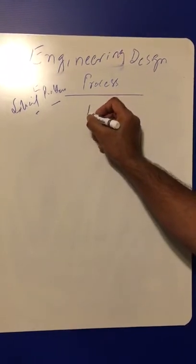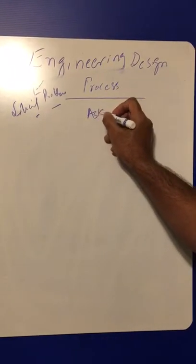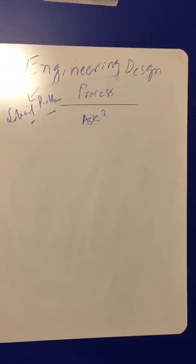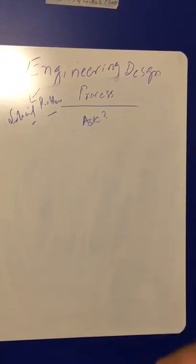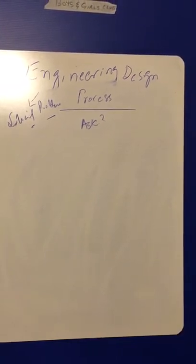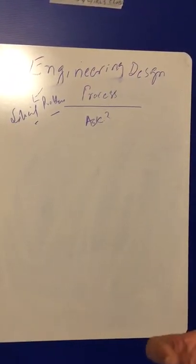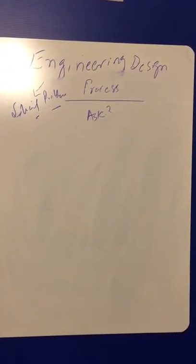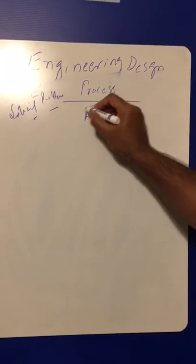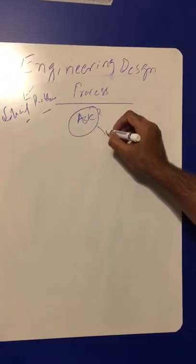The first key step of engineering design process is you ask a question. Asking a question means what the problem is. You define the problem, and a well-defined problem is half solved. So first you raise a question: what is the problem and how are you going to solve it? You do a kind of analysis into that.